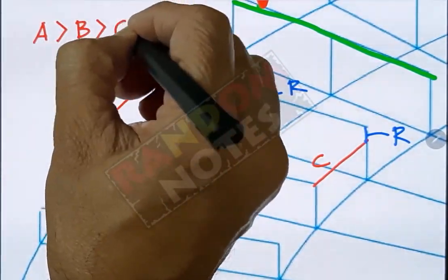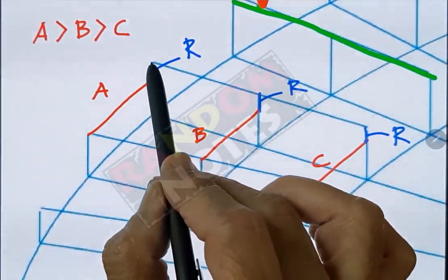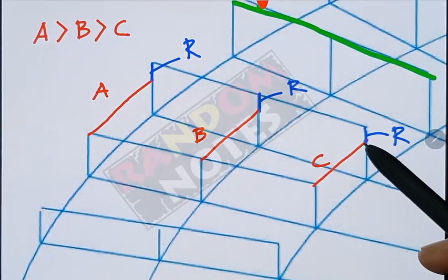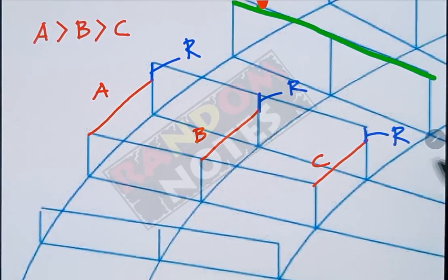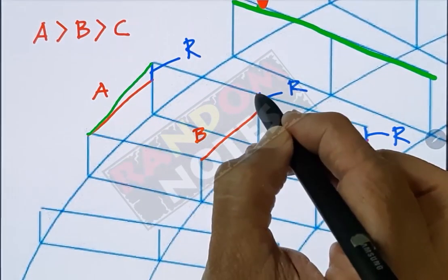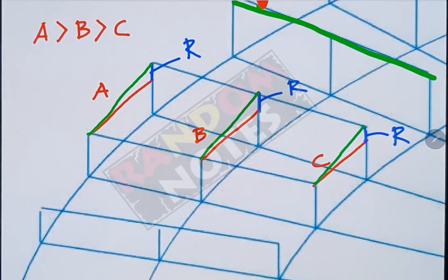So A is bigger than B, B is bigger than C. But the rise R is the same for them. And now if you make these three hypotenuses, the three of them are at a different angle.